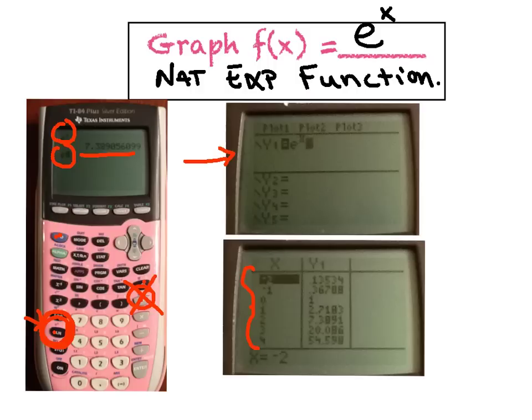Before I hit the graph button, I did go to the table menu. I was looking at the values of X starting at negative 2 at the top, going down until 4. You'll notice that the values start off very small, they're all positive on this list. They gradually get bigger and bigger, and then they start to take off like a rocket.